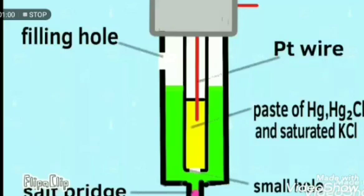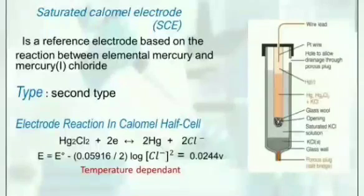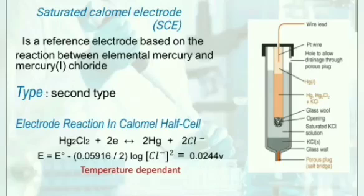The saturated calomel electrode is a reference electrode based on the reaction between elemental mercury and mercury(I) chloride. It's an example of a second-type electrode. The calomel electrode acts both as an anode and a cathode, depending on the electrode with which it is coupled.